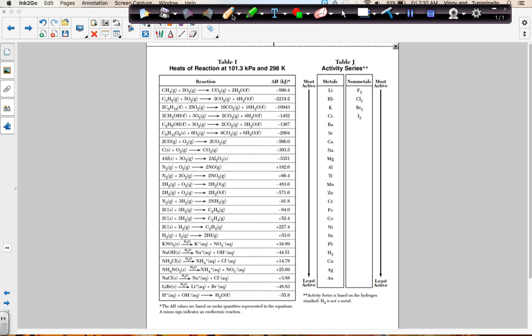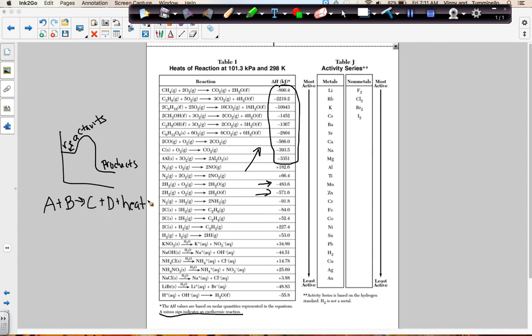The other very important piece of table I is that it says a minus sign indicates an exothermic reaction. So remember, any of the values that are negative, which for example, all of these are, that means that those are all exothermic reactions. So anything with a negative is an exothermic reaction. And remember, that means that the potential energy curve looks like this, where the products have less energy than the reactants, and energy is given off overall. And if we wanted to write this, we would write the heat or the energy term on the product side, when there is a negative delta H.